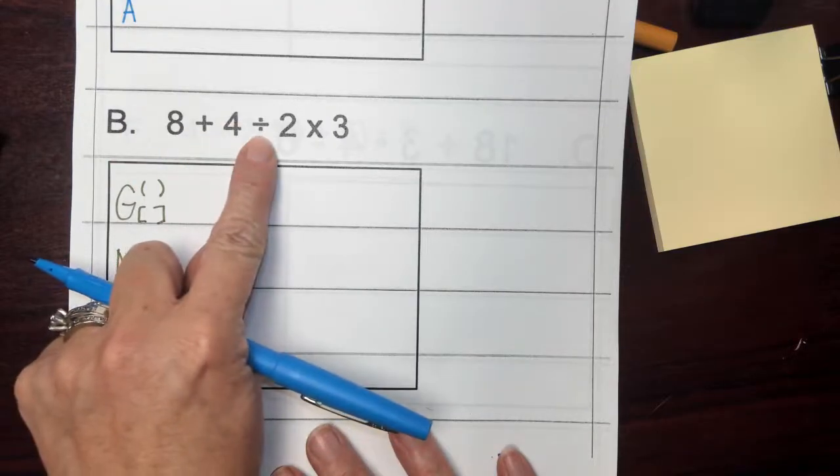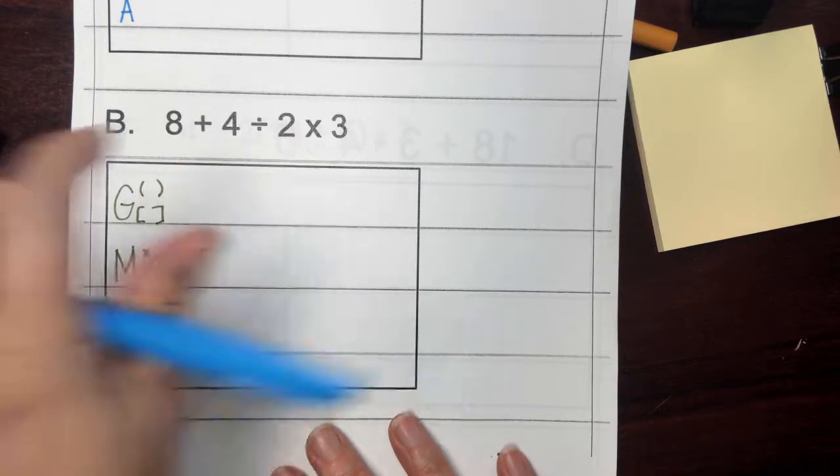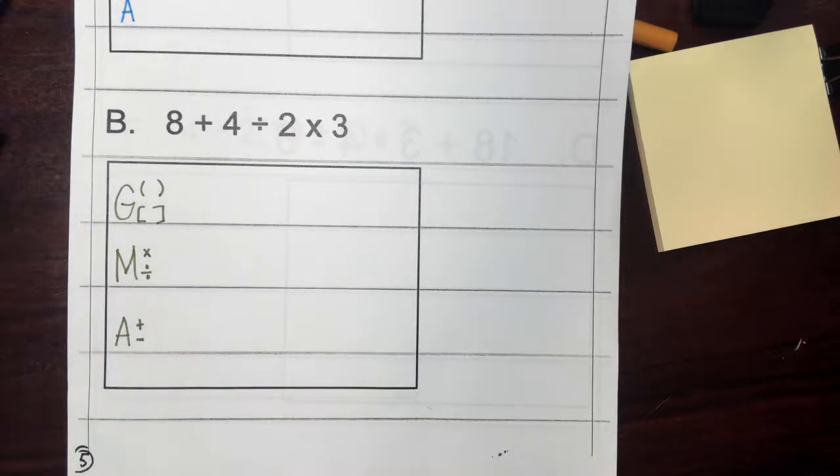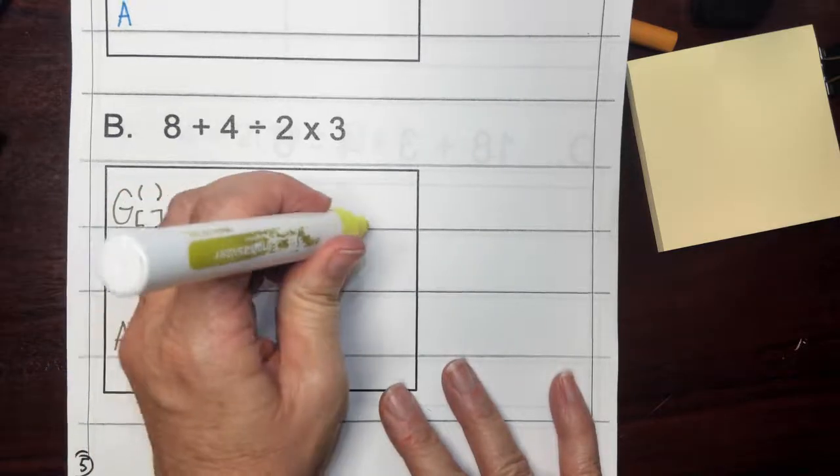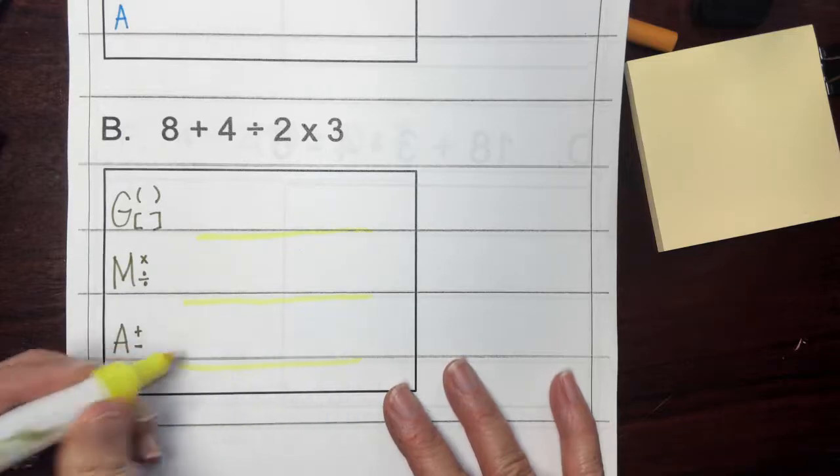So I see adding, division, and multiplication. So that's one, two, three. So right now I'm going to take my highlighter. I'm going to highlight three lines because that's how many I'm going to need to complete to get to my final answer.